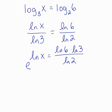This allows me to take e from both sides, cancel that out, we get x equals e to the natural log of 6 times natural log 3 all over natural log 2.